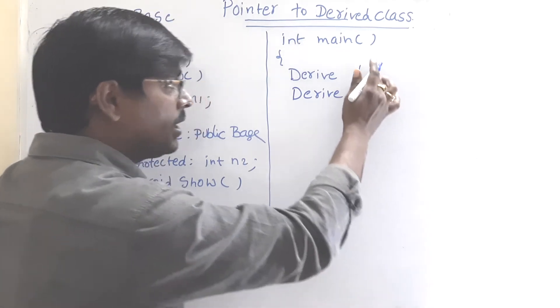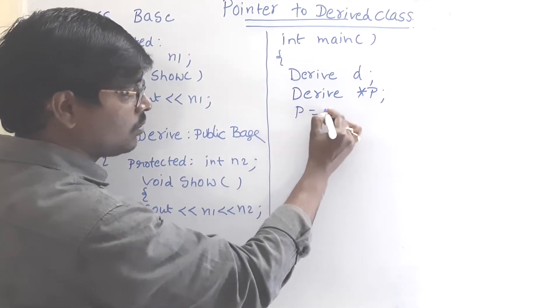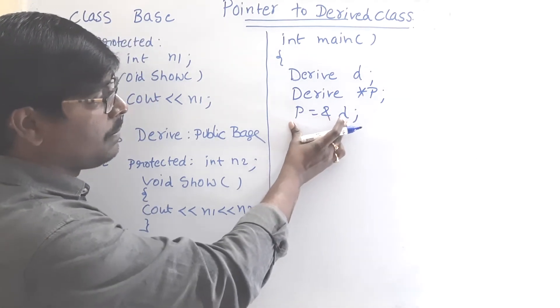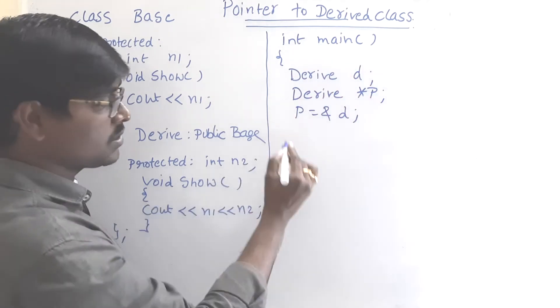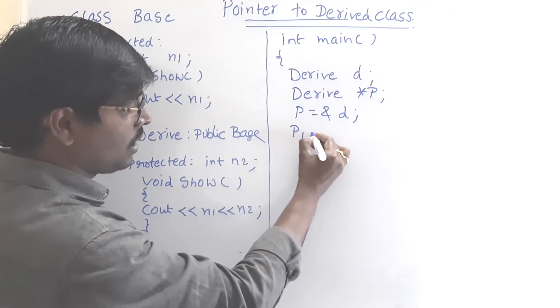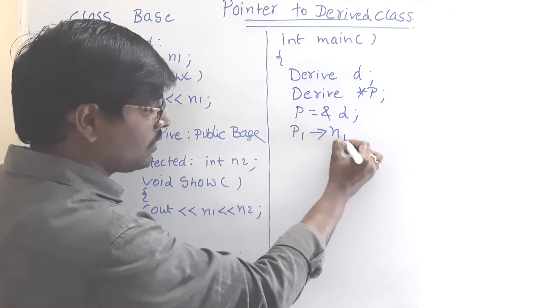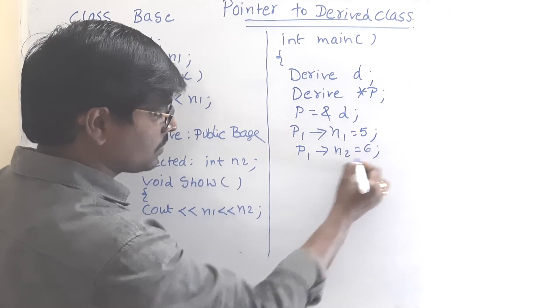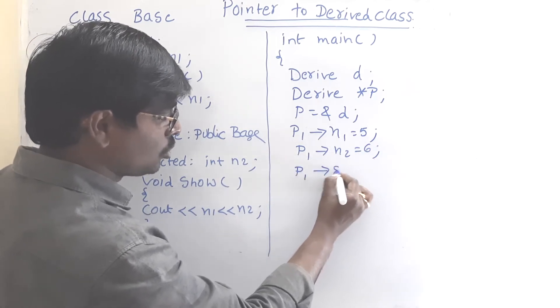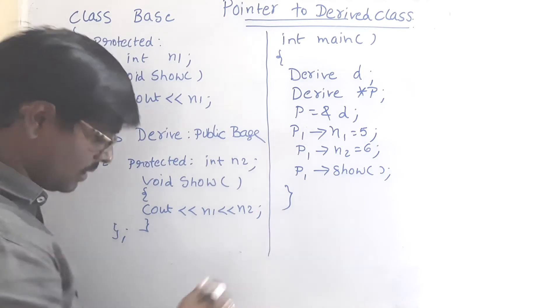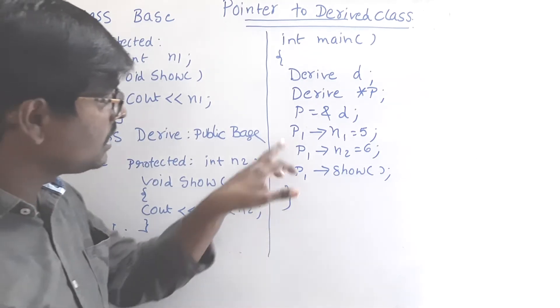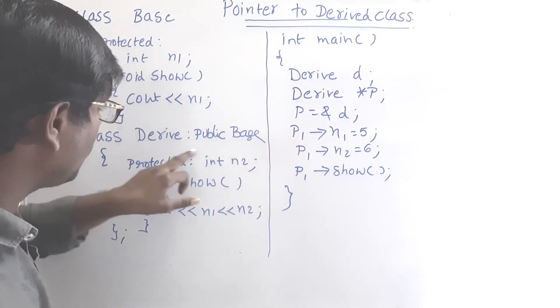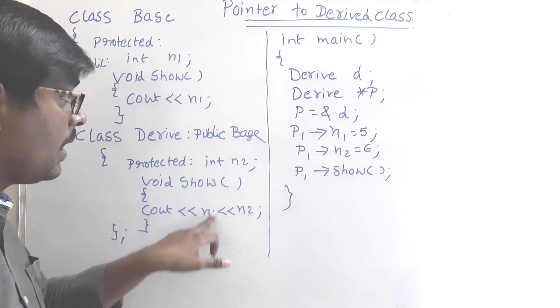Now p is equal to ampersand d. P holds address of this one. Suppose if you call like this: p arrow n1 is equal to 5, p arrow n2 is equal to 6, p arrow show. So that means by using this derived class pointer p1, I can access the n1, n2 and show method.